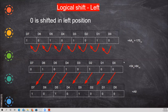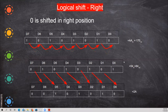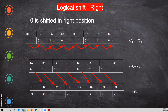Logical shift right is just the opposite of shift left. Now the bits are shifted towards the right. The D0 bit is lost. Then in that place, D7 becomes zero. Again when you shift, it continues in the same manner.